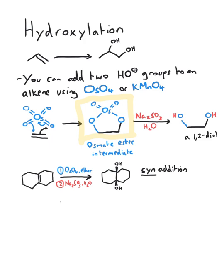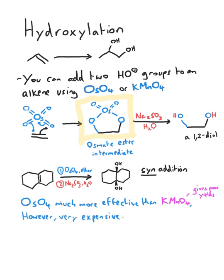You may realize that I keep talking about osmium tetroxide instead of potassium permanganate, even though both theoretically work. It's because osmium tetroxide is much more effective, but it is very expensive, whilst potassium permanganate gives you very poor yields, but it's cheap.